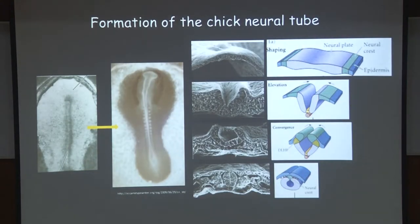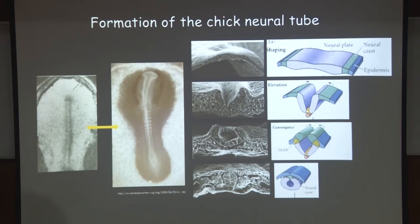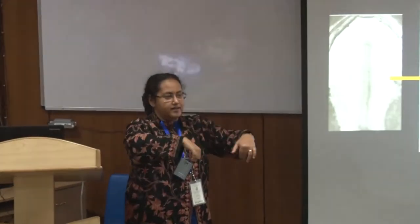I will give you insight into the development of one particular structure — the primordium for the nervous system, called the neural tube. At a very early stage, the embryo looks like a flattened disc of three layers. What you get is a line in the middle called the primitive streak — a little depression through which cells migrate. Initially there were two layers, and then the third layer forms in between, creating a sandwich of three layers.